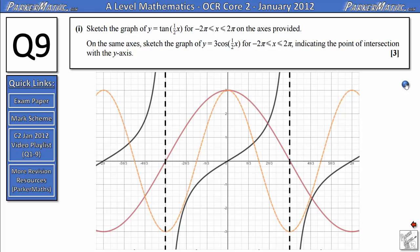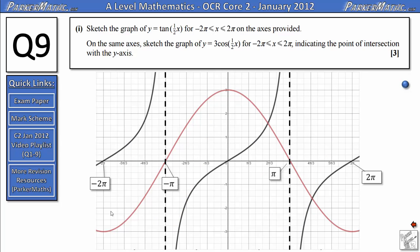So your final answer without any of the extra curves on should look like this. Key things to look out for: your tan(x/2) goes through -2π, 0, and 2π and has asymptotes at -π and π. And your 3cos(x/2) should go through 3 on the axis up here. It should cross the axis at -π and π and should repeat just once over the whole region.